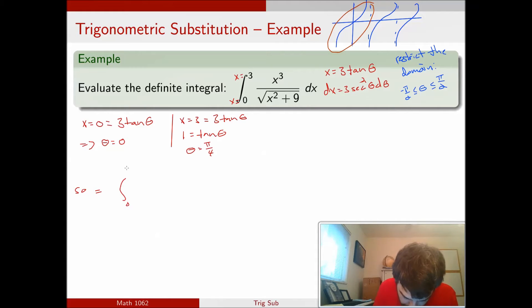Let's figure out exactly what it's going to be. My limits are established, 0 and π over 4. The x³ on the top—3³ is 27—so 27 tan³ θ. On the bottom, I have the square root of 3² is 9, so 9 tan² θ plus 9. And I have to convert in for my dx—don't forget your dx. It's another 3, sec² θ, dθ.